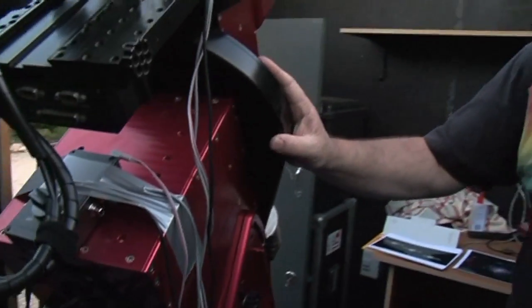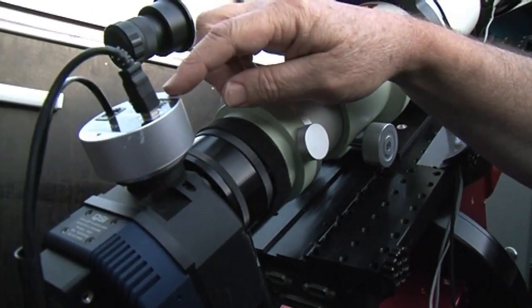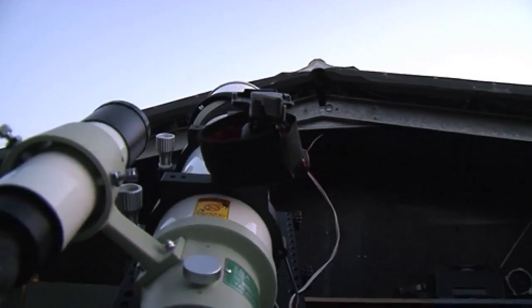This mount actually counteracts the rotation of the Earth. So it actually has a process of guiding. This is a guide camera. This camera focuses on a star and it tells the information on a computer where to keep that star right in that spot all the time.